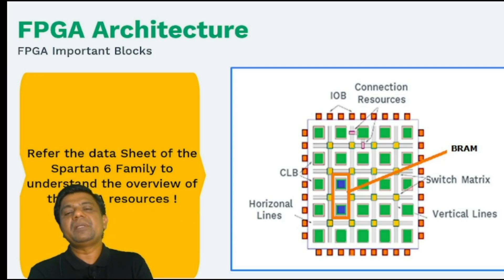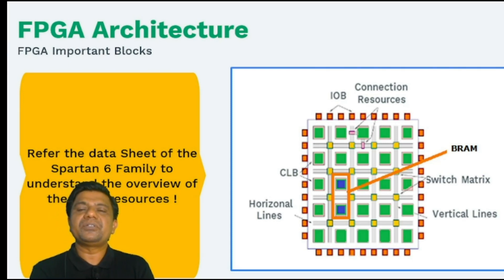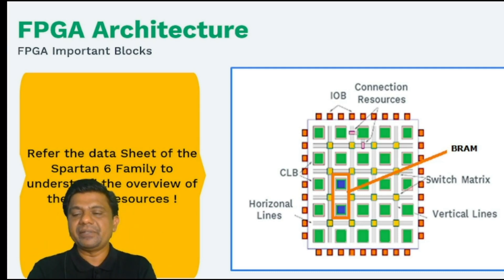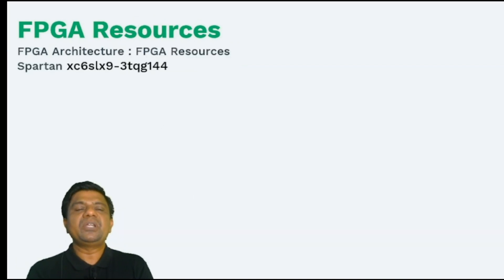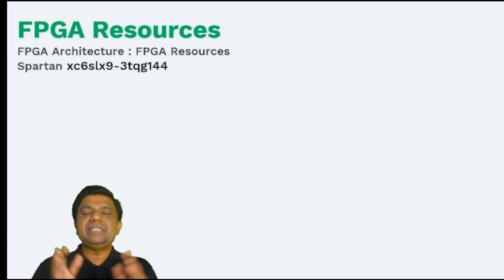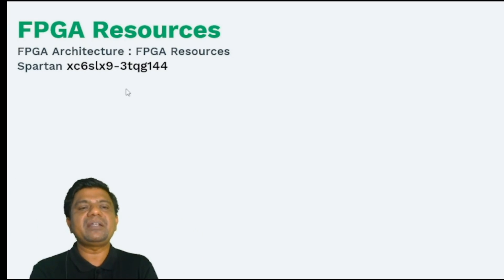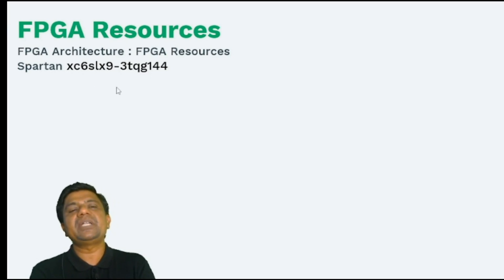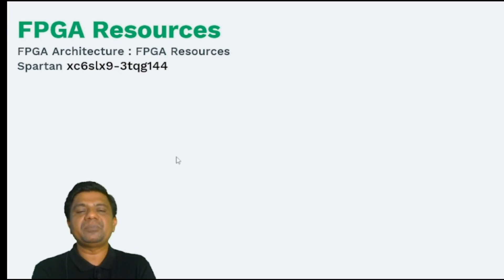We also have a switch matrix, programmable routing connections, vertical lines, and horizontal lines. Now let us try to understand what is in the Spartan 6 LX9 device — specifically the Spartan XC6SLX9-3TQG144 — and what the ordering information means. This is the device, this is the package, and these are the number of pins.